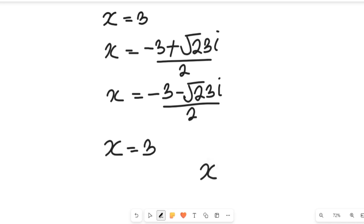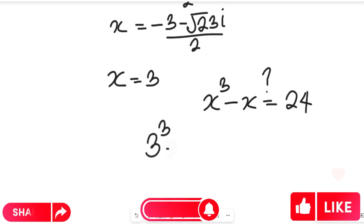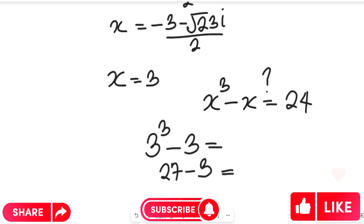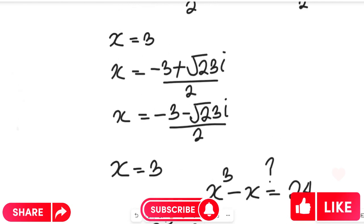Now let's confirm our solution by substituting the only real solution, x equals 3, into the original expression x³ minus x. We get 3³ minus 3, which is 27 minus 3, equal to 24. The left hand side equals 24, which matches the right hand side. So x equals 3 satisfies the equation.